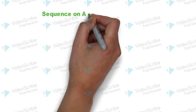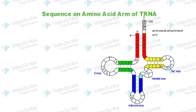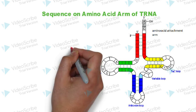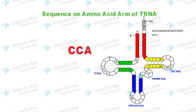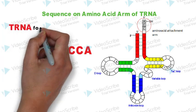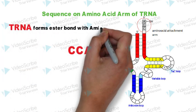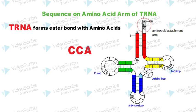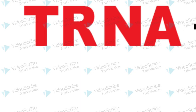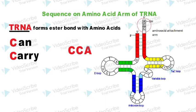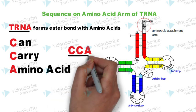The last mnemonic is to remember the CCA sequence on the amino acid attachment arm of tRNA. By this CCA sequence, tRNA forms an ester bond with amino acids. To remember this, just recall: 'a tRNA can carry amino acids' — the phrase 'can carry amino' will remind you of the CCA sequence.